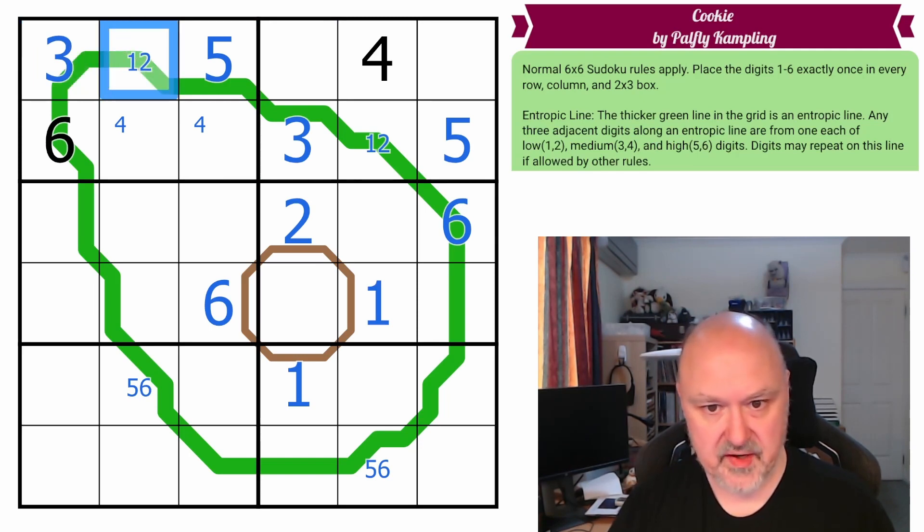This is not the 3. And now, every third digit along here has to be a middle digit, which are 3 and 4. So, this is 3 and 4. This is 3 and 4. This is 3 and... Oops, that's not the 1. It's this 1, which is 3 and 4.